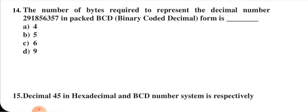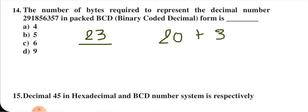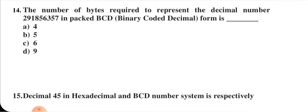Next question: number of bytes required to represent a decimal number in packed BCD form. Packed BCD means digits are stored together (e.g., 23 stored as one unit), unlike unpacked BCD. One byte equals 8 bits, and one BCD digit requires 4 bits.